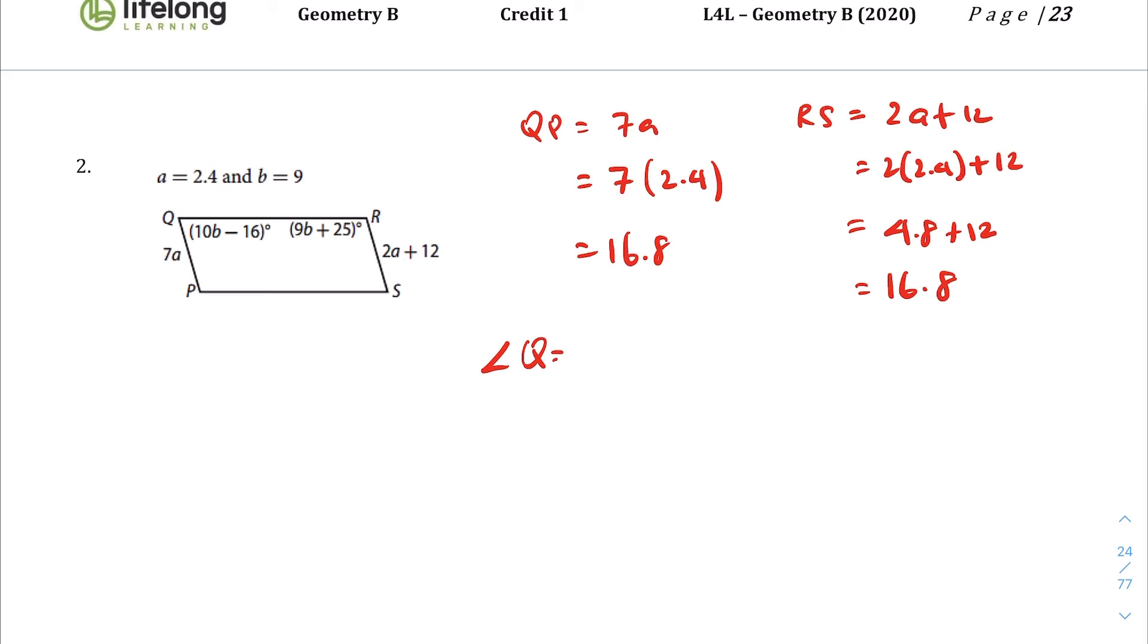And then let's do angle Q, 10b minus 16, 10 times 9 minus 16, this is 90 minus 16, what is that, 74? And angle R, 9b plus 25, 9 times 9 plus 25, equals 81 plus 25. Okay, I feel like I did something wrong here. Let's see, 106. Oh no, we haven't done anything wrong. Those two angles are not supposed to be congruent, they're supposed to be supplementary, and if you add up 106 and 74, you do end up at 180, so we have the correct angle measures.